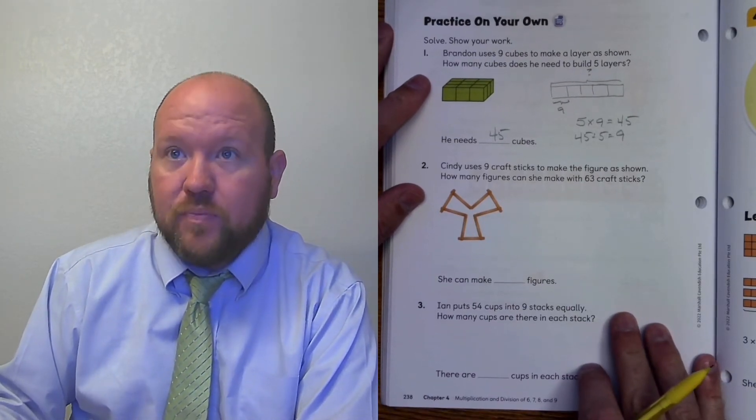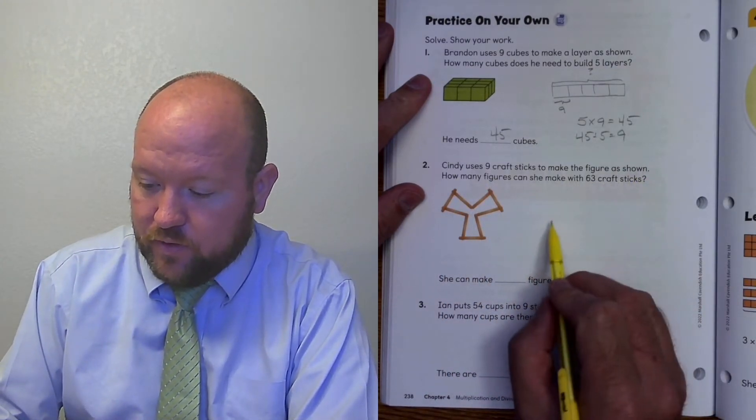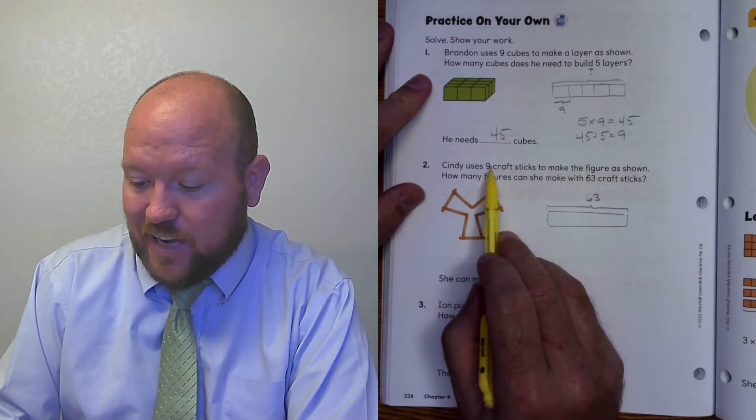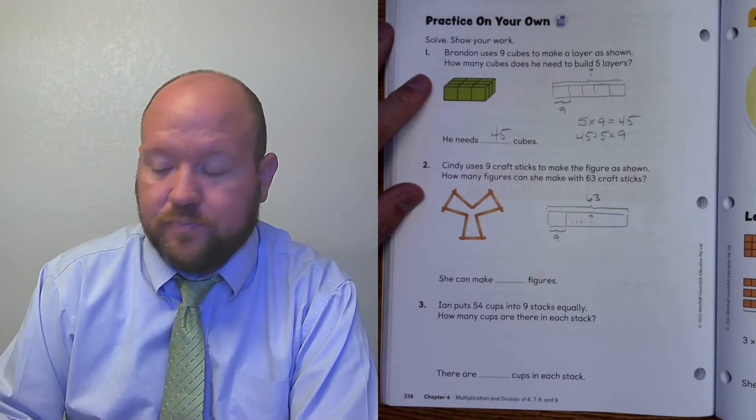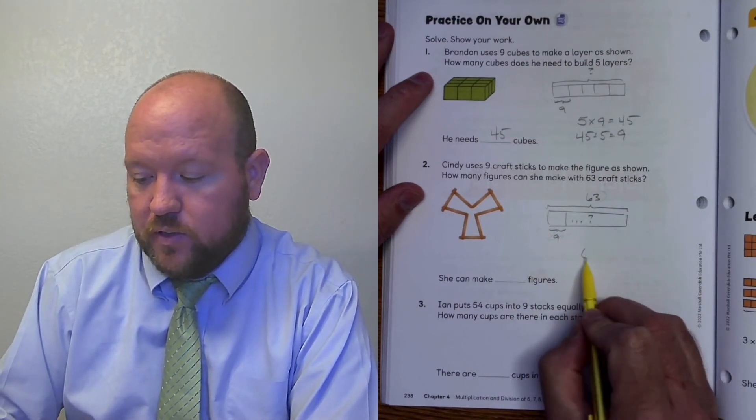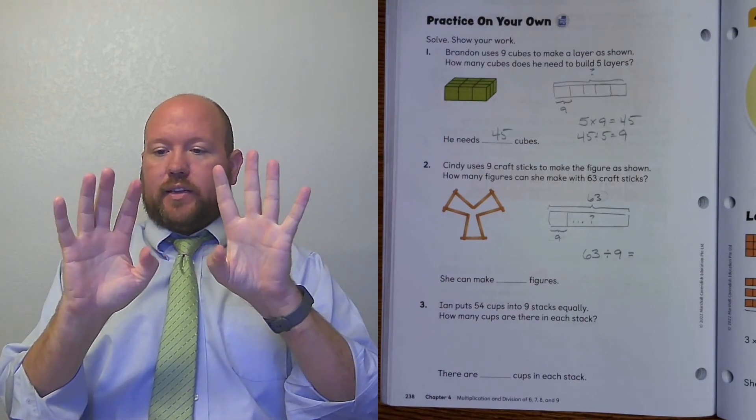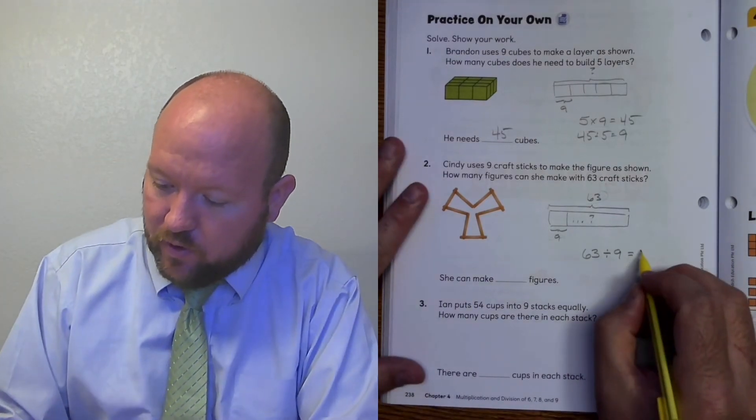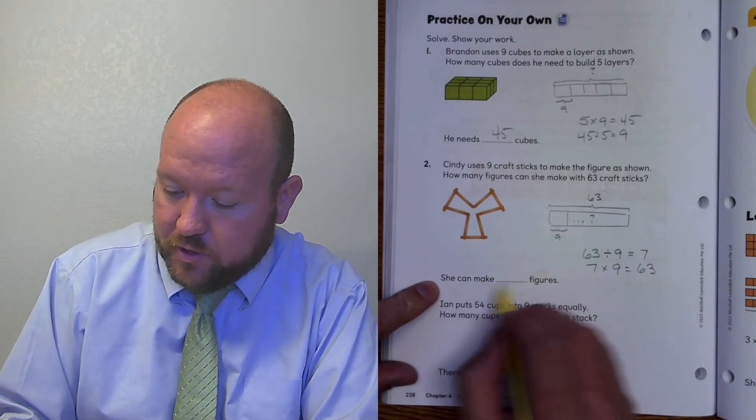Next. Cindy uses craft sticks to make the figure as shown. How many figures can she make with 63 craft sticks? So 63 sticks is how many we have. She uses 9 craft sticks to make this figure. So each one is going to take 9. And we're looking for how many total. So here we know the total. And we know how much each group is. How do we figure out the missing group? We're going to use division. 63 divided by 9 equals. We don't know it. I need 63. So I need 6 over here. So I've got to put that finger down. 6 and 3. So what finger did I put down? 5, 6, 7. I put the 7th finger down. And that's true because 7 times 9 equals 63. So how many figures can she make? She can make 7 figures.